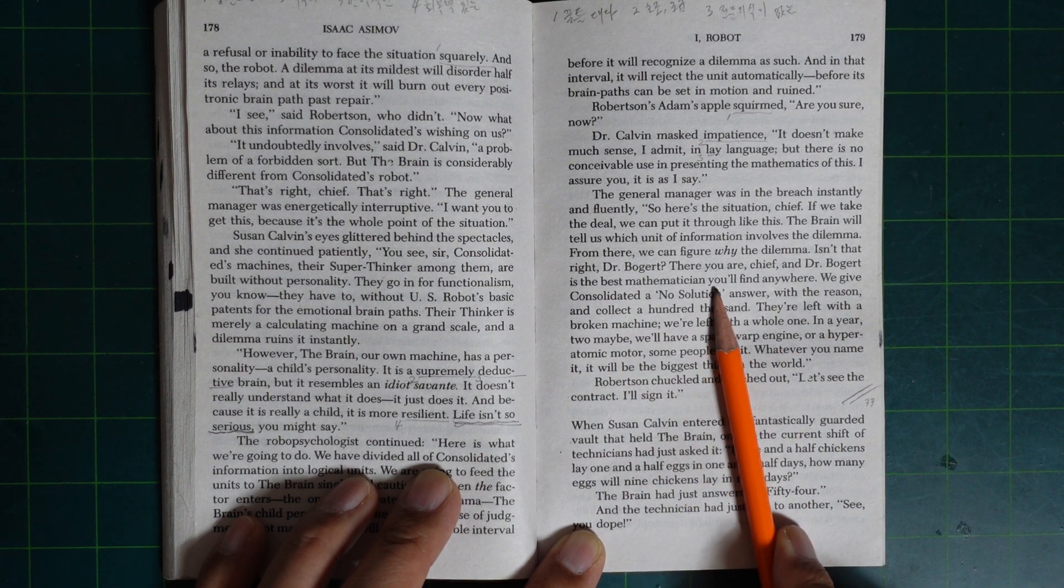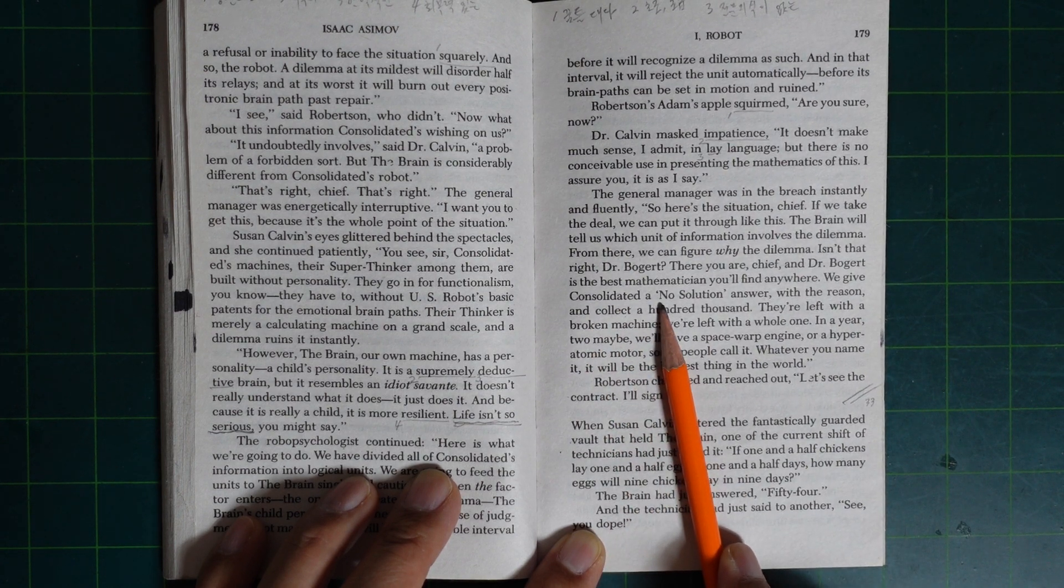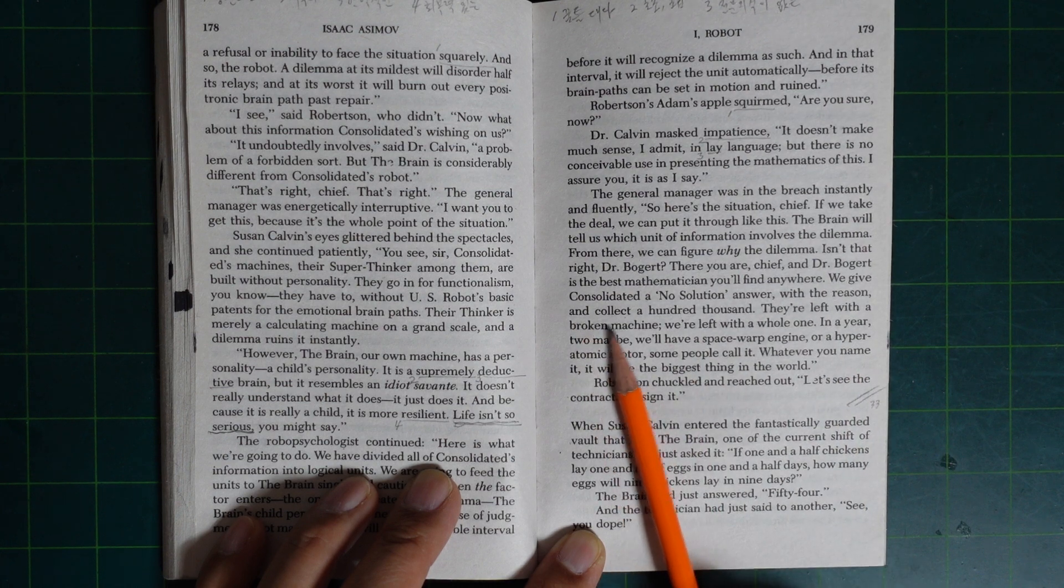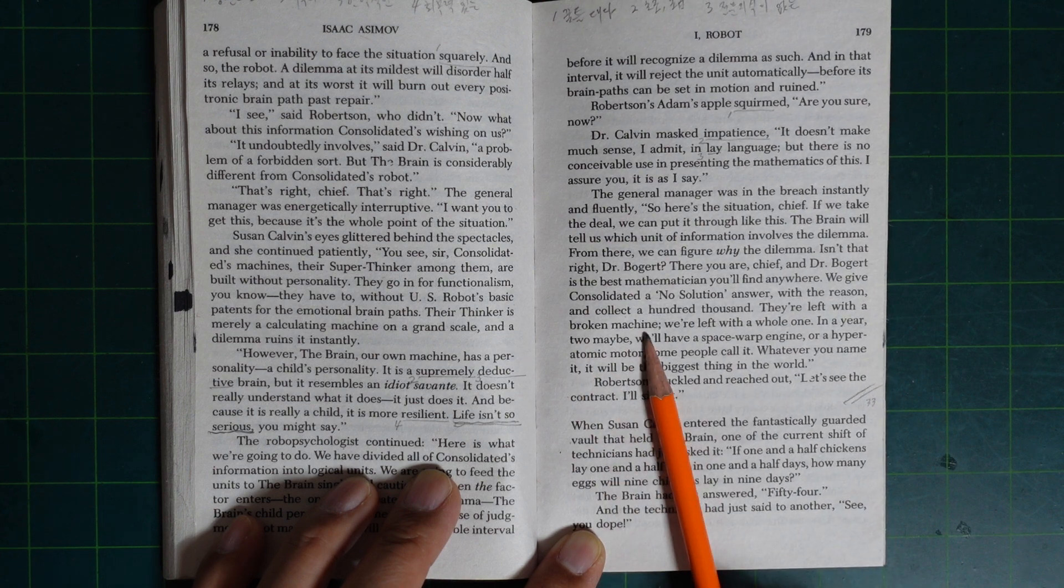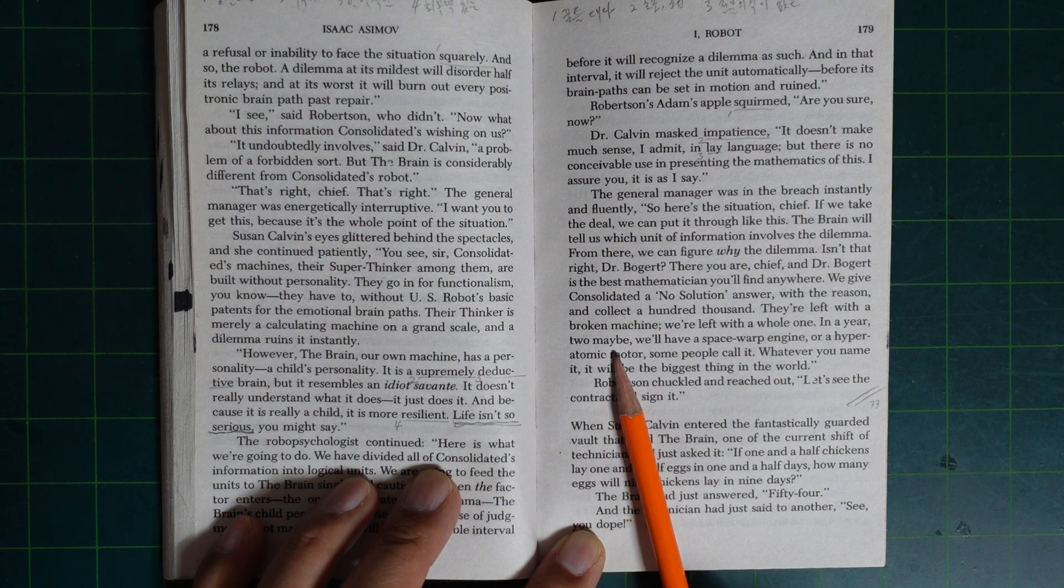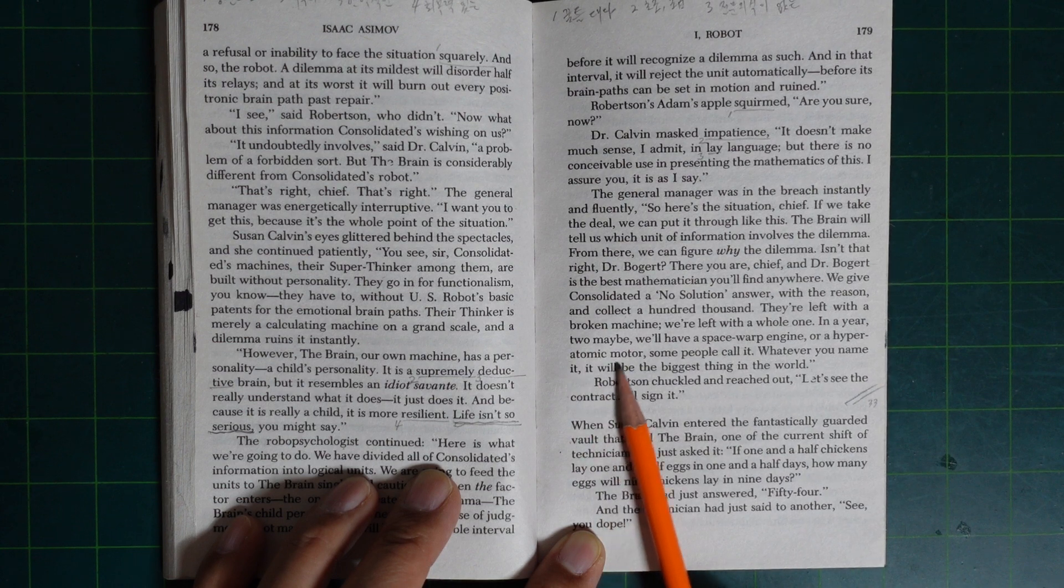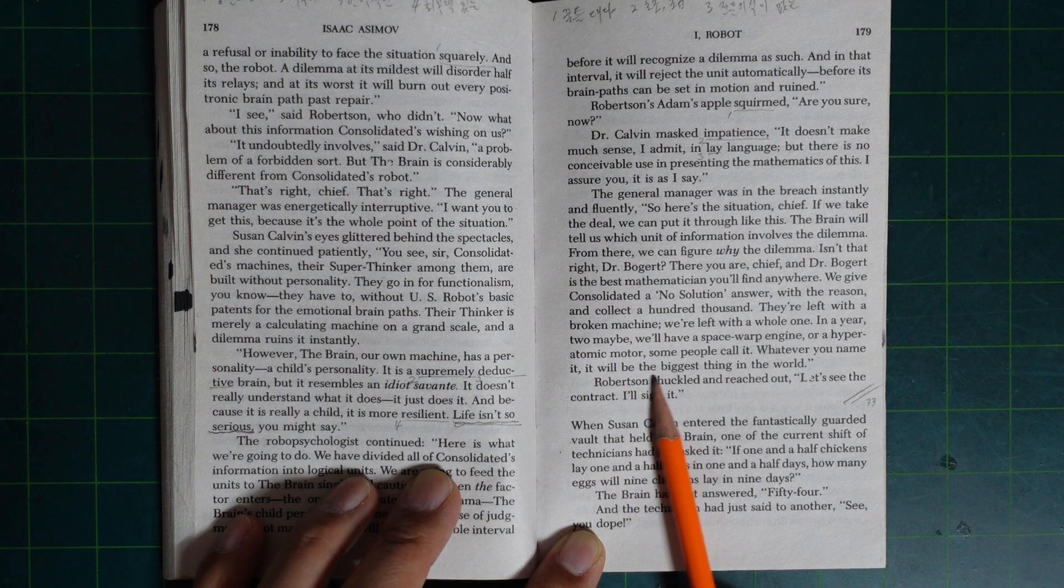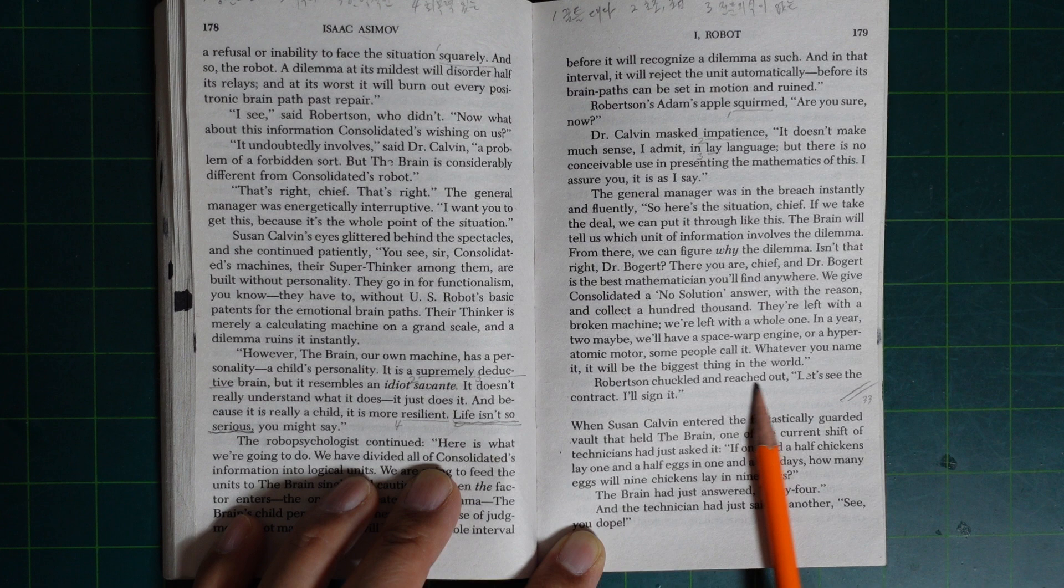We give Consolidated a no-solution answer with a reason and collect a hundred thousand. They're left with a broken machine. We're left with a whole one. And in a year, two maybe, we will have a space warp engine, or a hyperatomic motor—some people call it. Whatever you name it, it will be the biggest thing in the world.